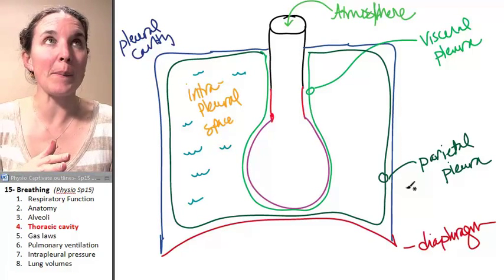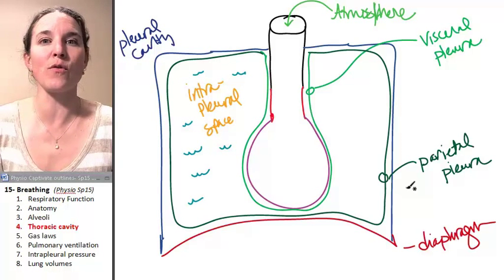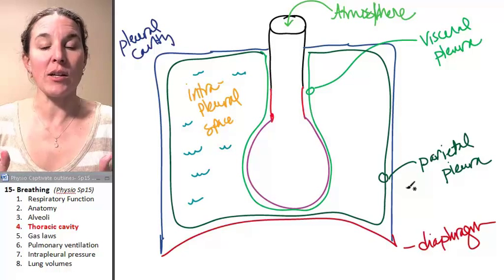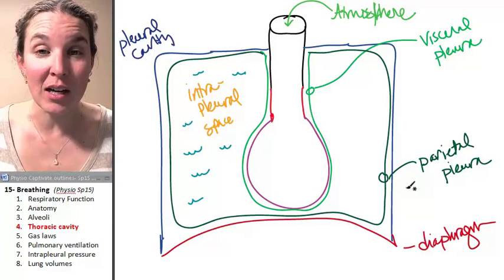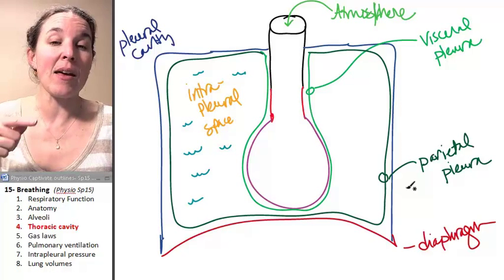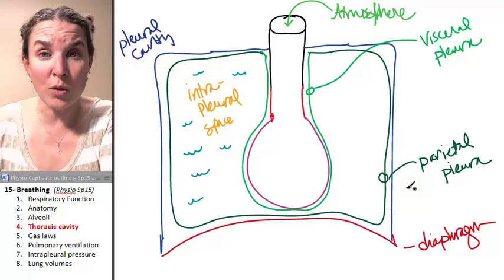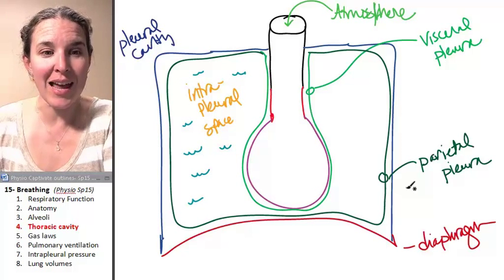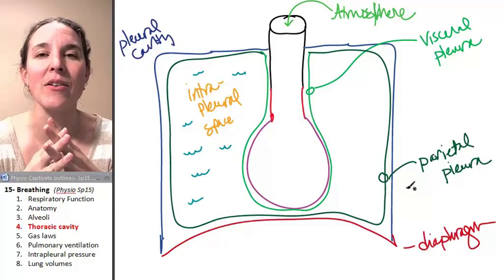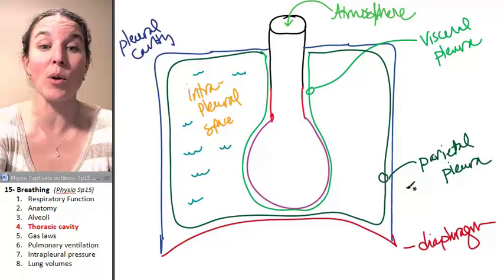The next thing that we're going to talk about are some gas laws that are going to regulate, provide rules for ventilation. Gases have to follow a couple of laws. There's actually three of them that we're going to look at. And once we've got our anatomy, we're going to look at the rules we have to follow with the gas laws. And then we're going to put those pieces together, and we're going to end up with some mechanisms for how we breathe.